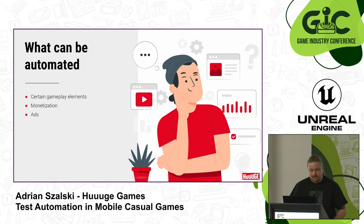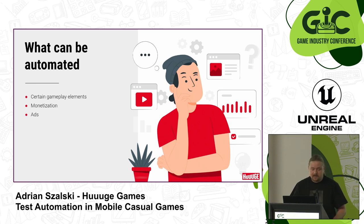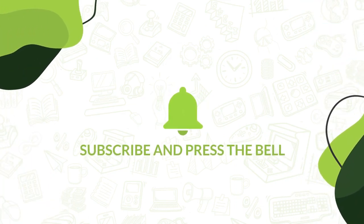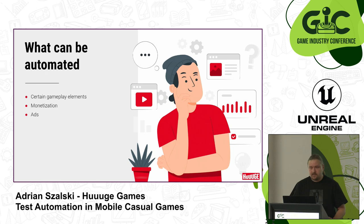Ads - the favorite part of every player. It's also a very important part for the stakeholders, so we need to be sure that ads are properly placed. In most cases, ads are provided by some sort of third-party software, and it's very useful for it to have some sort of REST API available to trigger these kinds of ads. If you have a way to trigger these ads, it shouldn't be a problem for the test automation to check whether they appeared in the correct place.